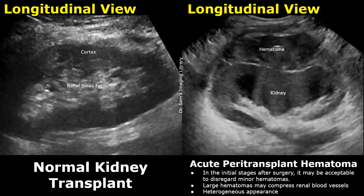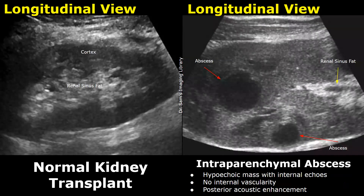Here is a case of intraparenchymal abscess. The abscess can appear as a hypoechoic mass with internal echoes. It will not have any internal vascularity, and it will also give posterior acoustic enhancement.